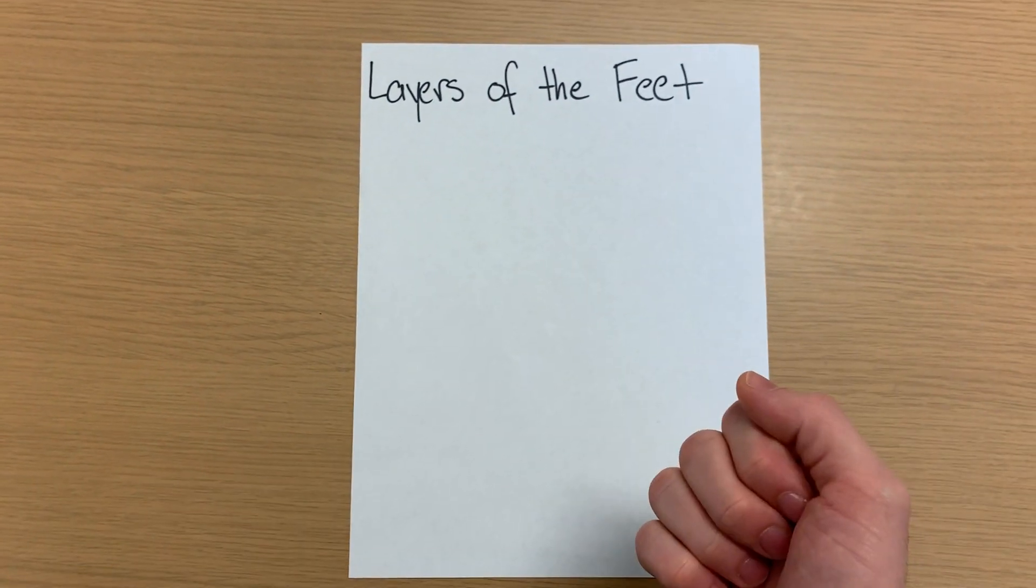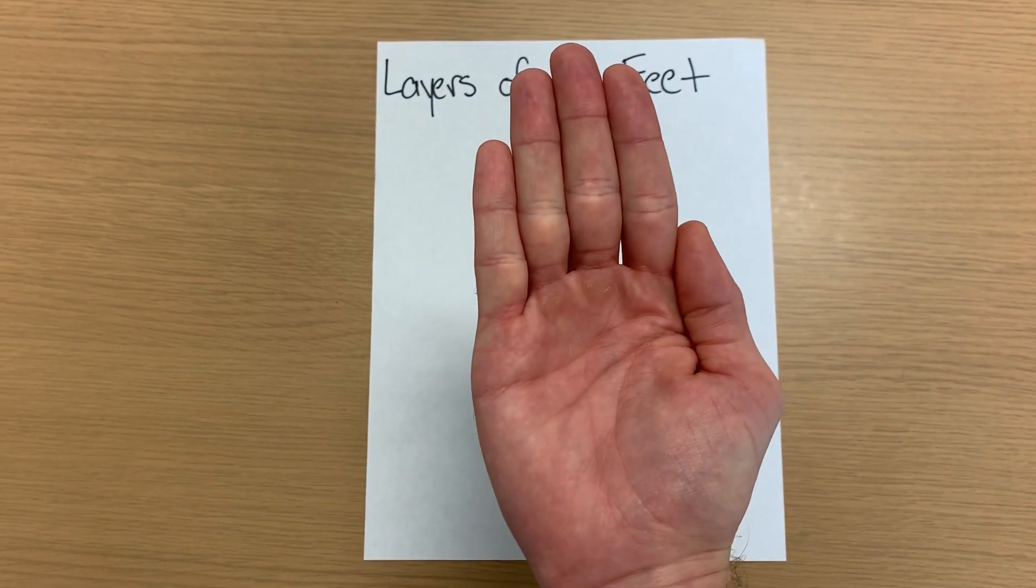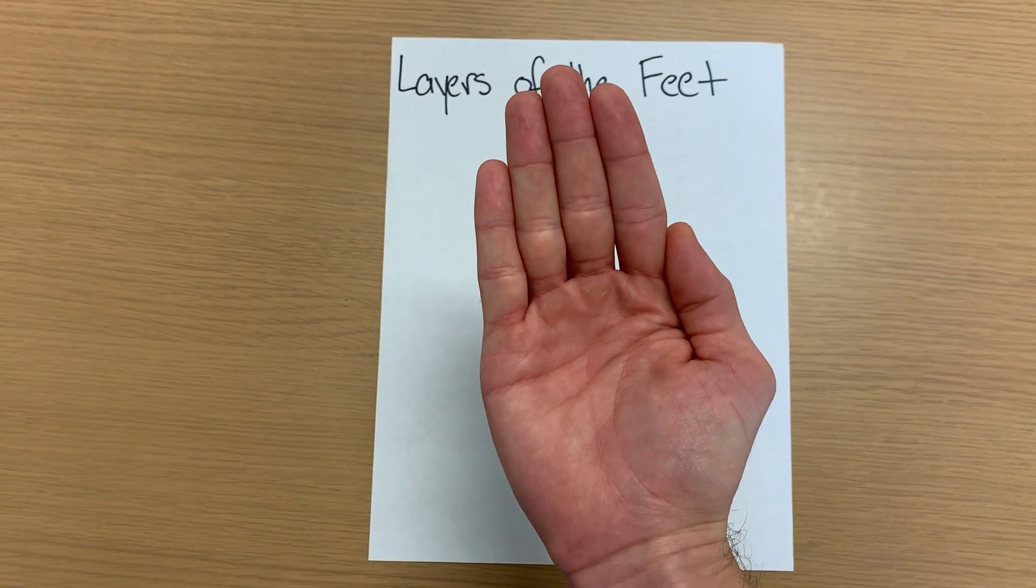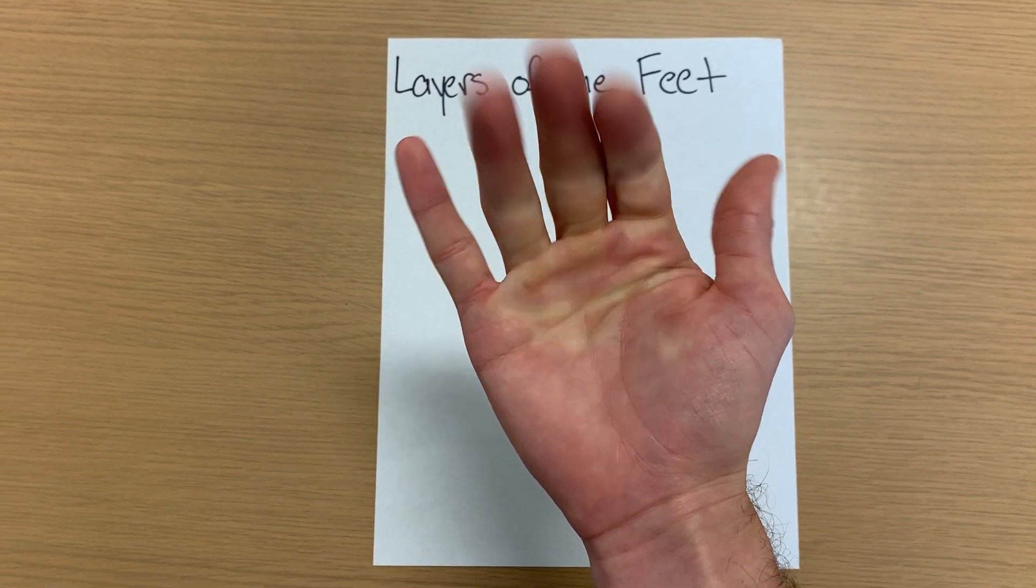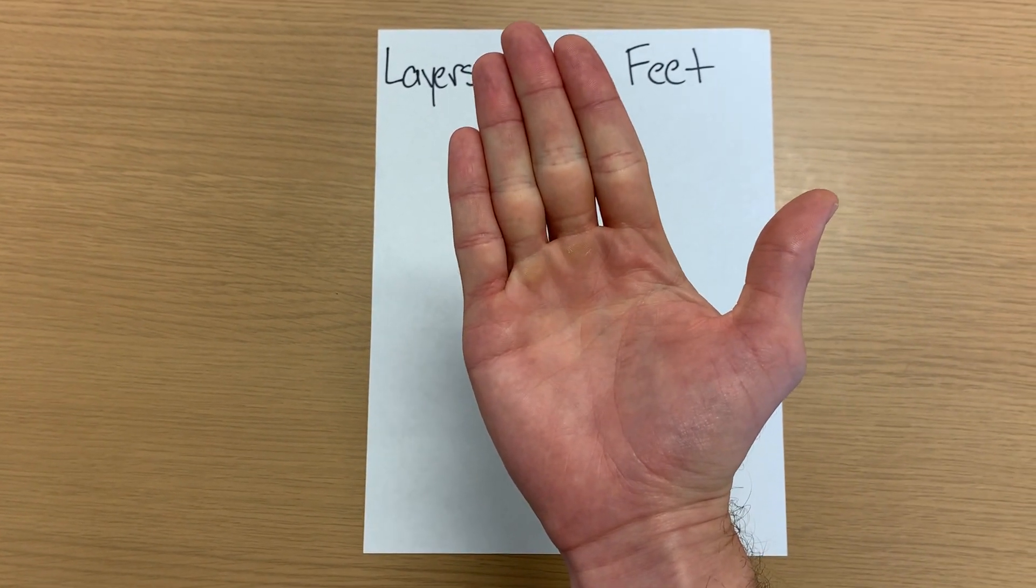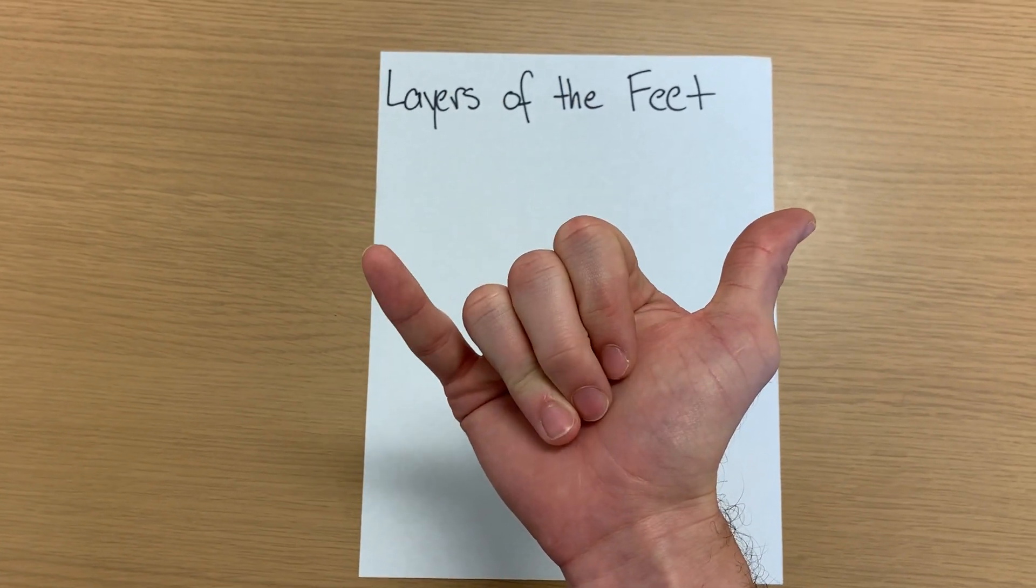So I'll go over that one more time really quick. So for most superficial layer, open hand like this, it's our plantar aponeurosis. And for our first muscle layer, hang loose, abductor hallucis, abductor digiti minimi, flexor digitorum brevis.